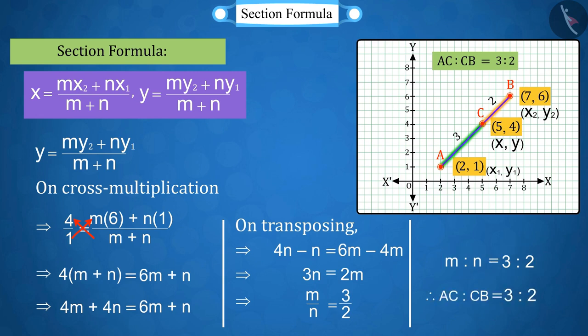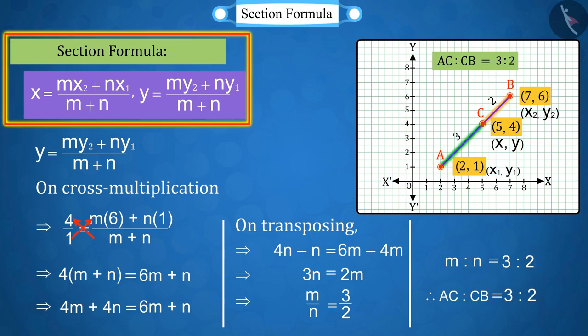That's correct. Using point y from the section formula, the value of the section m:n as 3:2 is what we get. So we can say that from any point in the section formula, the value of m:n can be determined.